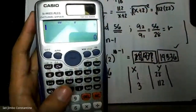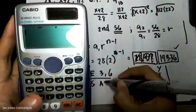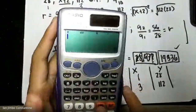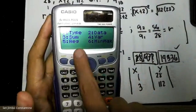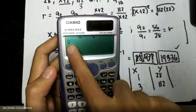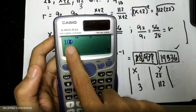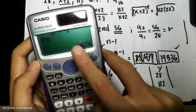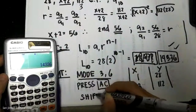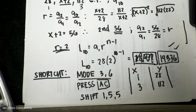The shortcut for geometric progression: Mode 3, 6. Input known term pairs as x-y values. Press AC, then Shift, 1, 5, and enter the term number before pressing Ŷ to get your answer. This shortcut is for checking only — your formal solution should show the full working.